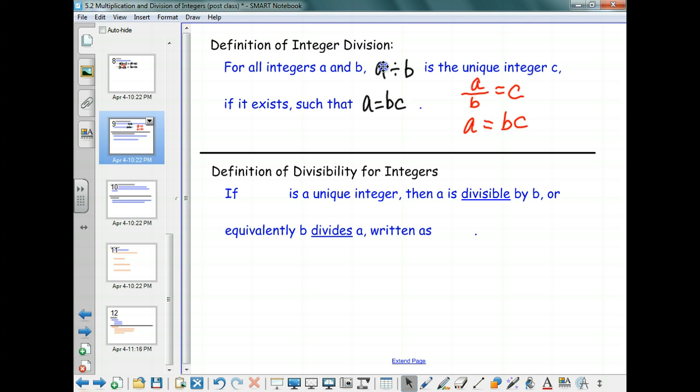All right, one more definition for division here. If a divided by b is a unique integer, that is, if you actually end up with an integer value out of this, then we say that a is divisible by b, or equivalently b divides a, and that is written like this. I think you've seen that notation before when we do it with whole numbers, right? So it's not any different. It has the same language, the same notation. It's just that this is now extending to integers, whereas before we only talked about it in relation to whole numbers.